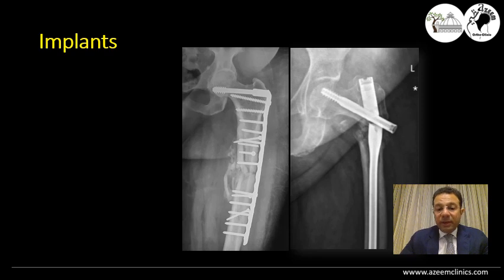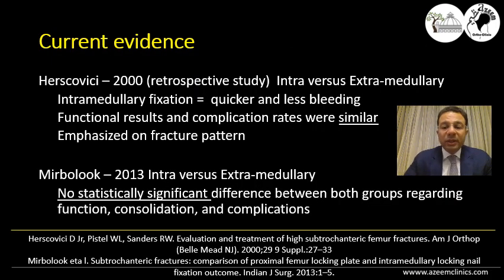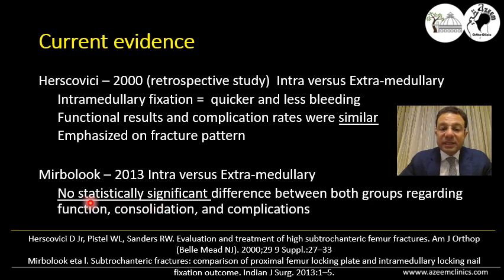But if we look at what we see clinically, we find that plates can bend and fall into varus, and nails can also fail. So it is not a matter of implant — there is something missing. When we review the literature to see the current evidence, we find that many papers comparing intramedullary versus extramedullary fixation found that functional results and complications were similar.